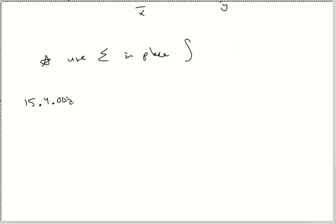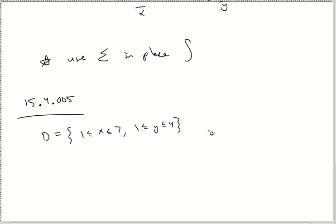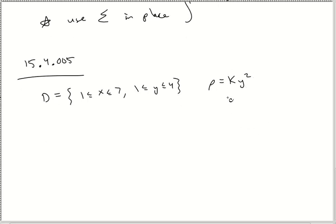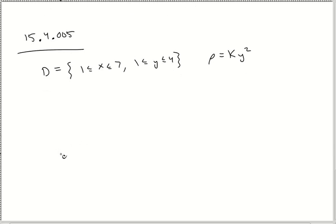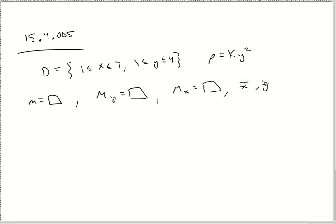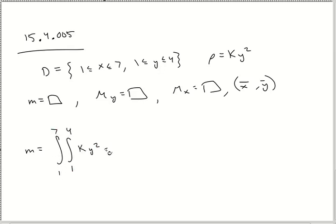Problem 15.4.005: D has x from 1 to 7 and y from 1 to 4, and they say ρ equals ky squared — so it's a variable density. My goal is to find little m, then M sub y and M sub x, and then use those to find the center of mass. So for little m, I'm going to do a double integral, dy dx, from 1 to 4 and 1 to 7, of ky squared dy dx.